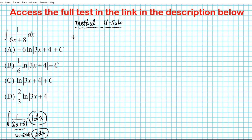Now let's go ahead and evaluate the integral — we want to integrate one over (six X plus eight) DX using U-substitution. If you take a look at the answer options, you notice something interesting: each option contains a plus C and a quantity of three X plus four.